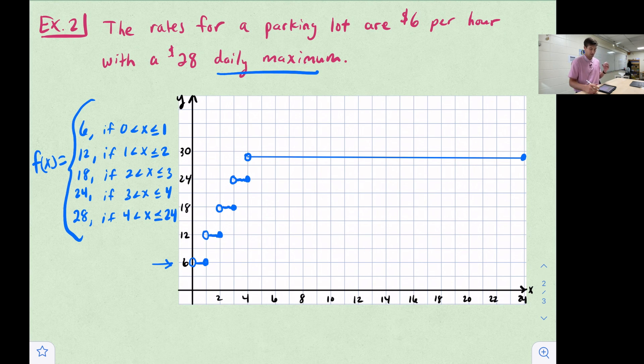That shows me paying absolutely nothing if I don't park my car. But then as soon as I park my car through the first hour, it's $6. Through the second hour would be $12. Through the third hour is $18. Through the fourth hour is $24. And then after that fourth hour starts, or I guess when my fifth hour begins, $6 per hour would get me to $30, but there's a $28 maximum. And that's for the day. So from there, from hour four, past hour four, all the way through 24 hours, I'm only going to pay $28.